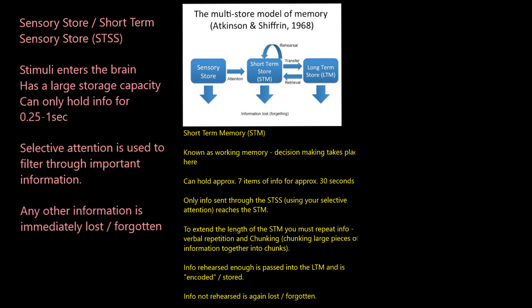If I want to store a piece of information, a movement pattern, or a skill for good, I've got to rehearse it. If I repeat something enough times, it gets passed into my long-term memory where it gets encoded, stored for good, and retained. However, if I decide not to rehearse information, I lose it. There's also a two-way arrow — when I want to retrieve information from my long-term memory, my short-term memory can retrieve it. Remember, the short-term memory is the decision-maker.